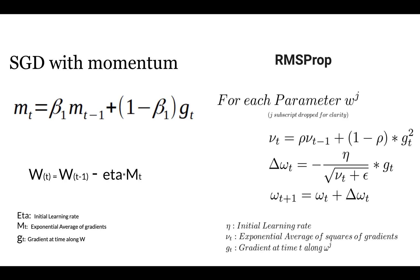Now I will discuss the difference between SGD with Momentum and RMSProp. Both optimizers are used for updating the weight parameters in machine learning and deep learning algorithms. For SGD with Momentum, we take a variable called momentum — this is the current momentum and this is the previous momentum.